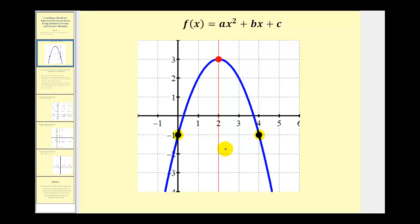So the idea is, if we can find two symmetric points on the parabola, then we know the axis of symmetry would have to pass through directly in between the two points, allowing us to also find the x-coordinate of the vertex, and therefore find the corresponding y-coordinate as well from the function.